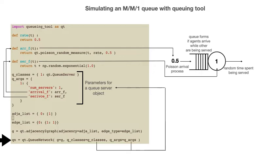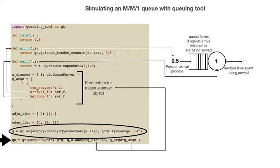Now that we understand the queue_classes and queue_args variables that are passed to the constructor for the queue network object, the only question that remains is what the variable g is that we also pass to the constructor. This variable is created by a command that is also part of queuing tool, as it starts with qt dot.